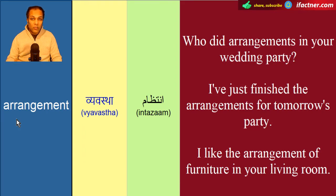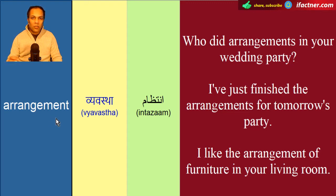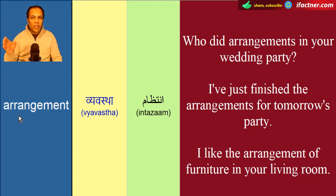Arrangement word 'arrange' say nikla hai. Arrangement ki spelling hoti hai: A-R-R-A-N-G-E-M-E-N-T. Spelling yaad kerne ka aasan tariqa hai: A-R-R, phir 'range' yaani R-A-N-G-E, aur phir M-E-N-T — arrangement.